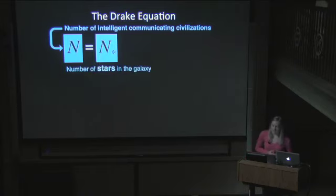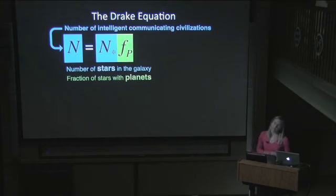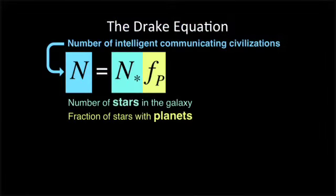Frank Drake estimated the number of stars in the galaxy — something we can measure fairly well, a known quantity. The next term multiplies the number of stars by the fraction of those stars that have planets. Back in the 1960s when the Drake Equation was proposed, this fraction was completely unknown. We knew our solar system had planets, so maybe it was one, but maybe the Sun was the only star with planets. Now with Kepler, we know from Francois Fressin's results that one out of every six stars has an Earth-like planet, and it seems increasingly likely that nearly all stars have a planet of some sort.